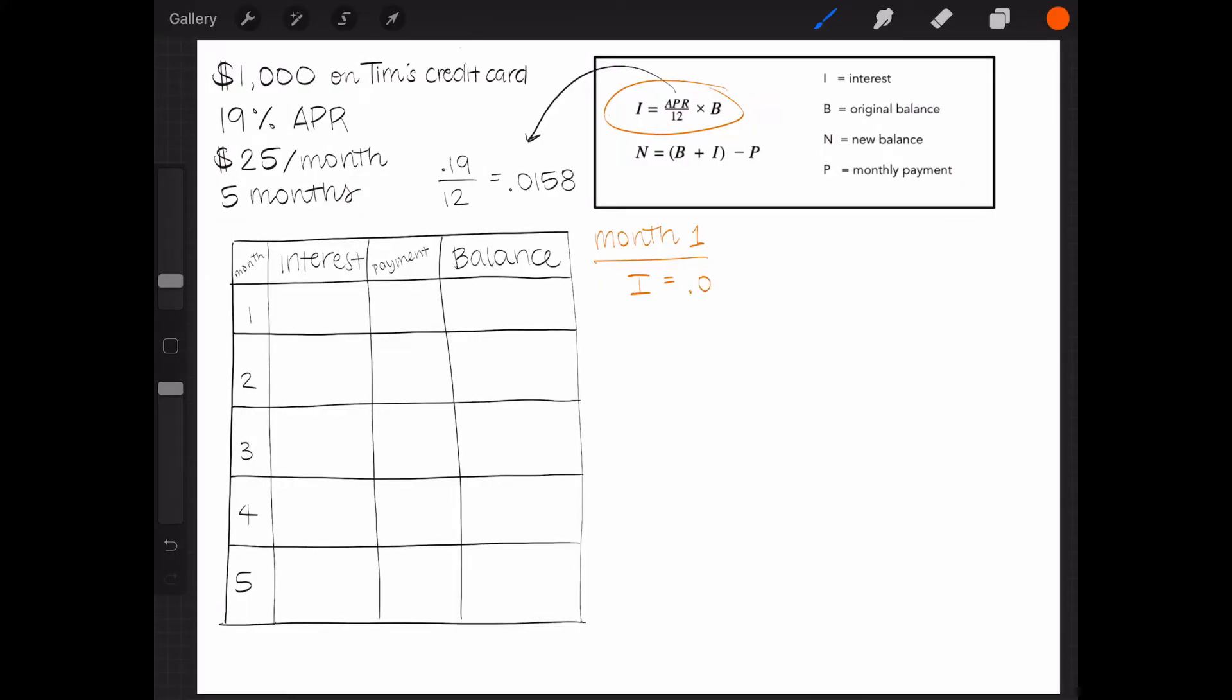Following the formula, I'll multiply by B, which is the original balance of $1,000. The monthly rate of 0.0158 times the original balance of 1,000 equals $15.83. This is how much our first month's interest is, so I can enter that value into the table for interest.